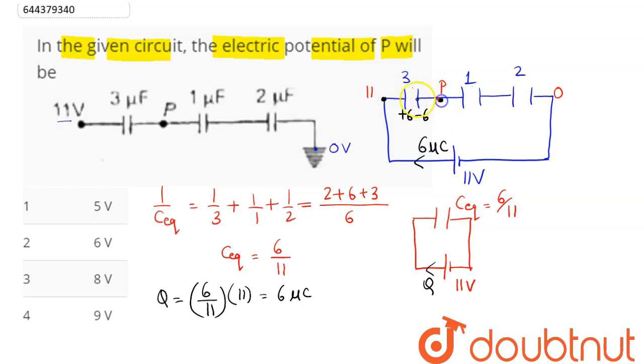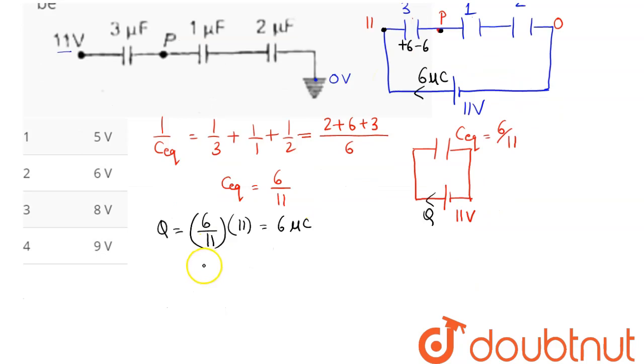The potential difference can be written as 11 - V_P = Q/C. Q is 6 microcoulomb and C is 3 microfarad, so this equals 2.